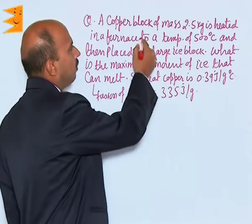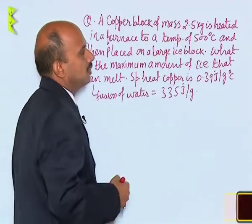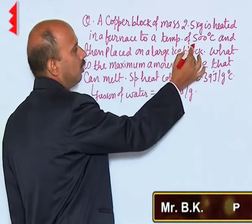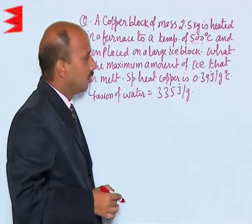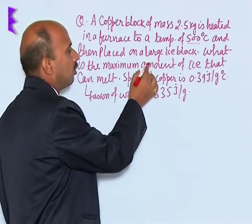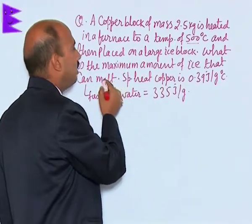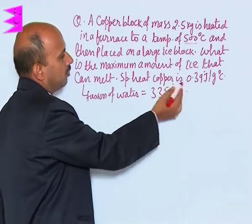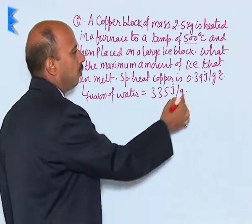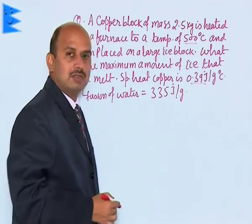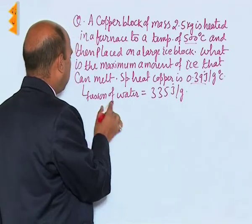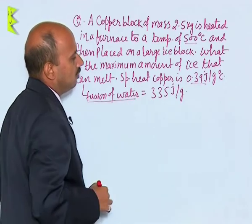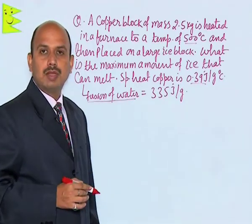Now, see in this example, a copper block of mass 2.5 kg is heated in a furnace to a temperature of 500 degree Celsius and then placed on a large ice block. What is the maximum amount of ice that can melt? Specific heat of copper is given to you 0.39 joule per gram degree Celsius and the latent heat of fusion of water is 335 joule per gram.